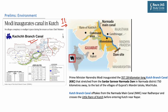The next news on page 11 mentions the Kach Branch Canal, recently inaugurated by Prime Minister Narendra Modi. The 357.18 km long canal stretches from the Sardar Sarovar Narmada Dam in Gujarat. The Kach Branch Canal offtakes from the Narmada Main Canal near Radhanpur and crosses the Little Rann of Kach before entering Kach near Rappar. This news is mainly important from the prelims perspective, covering the canal and challenges faced during its construction to reach the arid areas of the Rann of Kach.